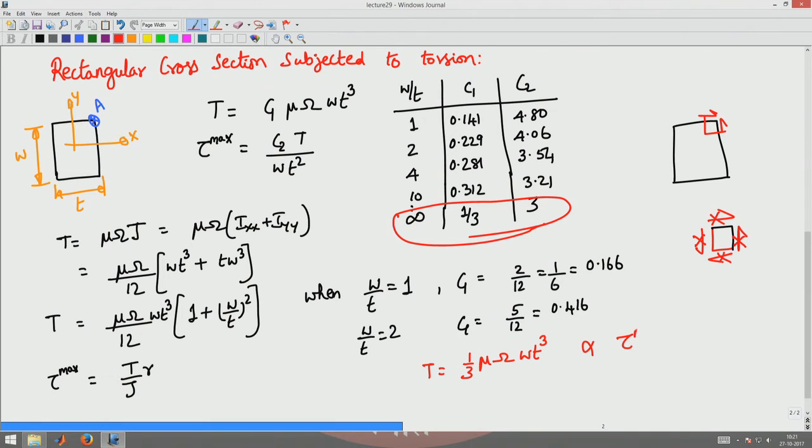And the shear stress maximum which is of interest would be given by 3 times torque divided by w t squared. Now let's apply this to a practical problem.